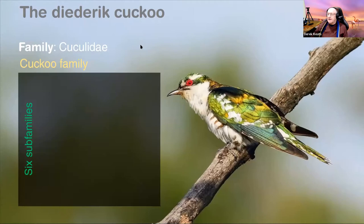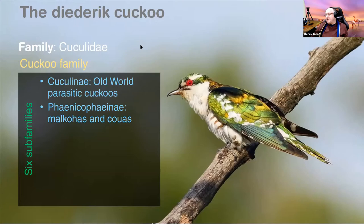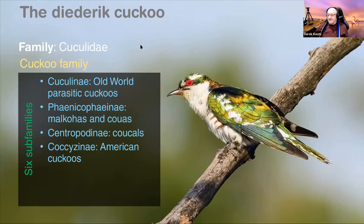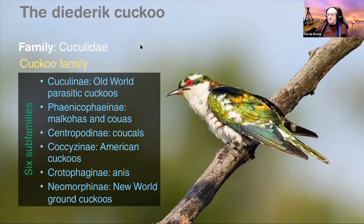The Cuculinae, the old world parasitic cuckoos, are the typical familiar cuckoos, at least outside of the Americas — like the red-chested cuckoo, an icon of spring and summer in southern Africa. Its call is said in Afrikaans to sound like 'Piet-my-vrou' — 'Peter, my wife' — go figure. This group also includes the common cuckoo, the African cuckoo, and the Madagascar cuckoo. The Phaenicophaeinae includes the malkohas, and in southern Africa we have the green malkoha — a difficult bird to photograph as it stays high in dense forest canopy.